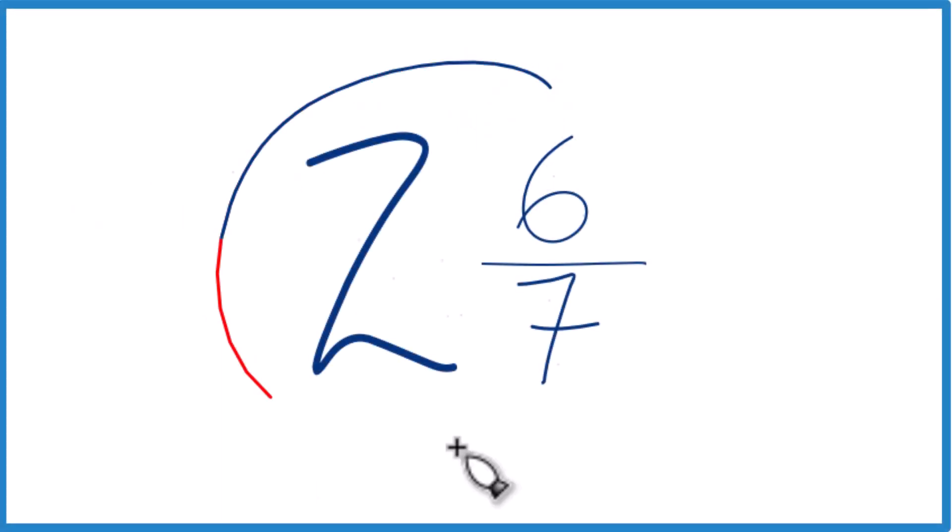Let's write the mixed number 2 and 6 sevenths as an improper fraction. Here's how you do it.